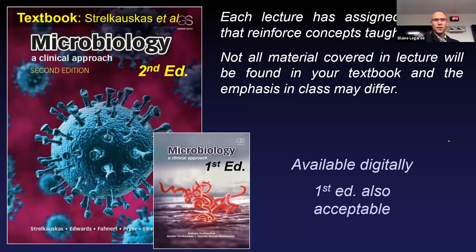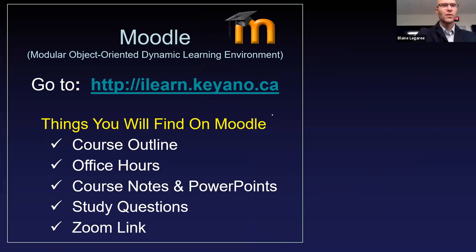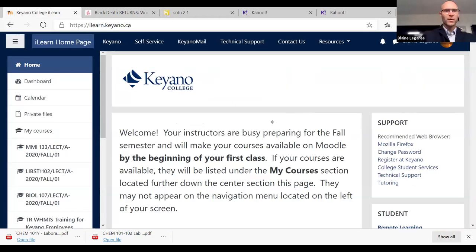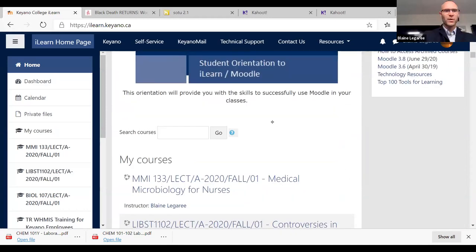Hopefully everyone has found Moodle. You can log in using your Keano credentials. So there's Moodle — this is what it looks like for me. This is the home page. I go down and find my classes, and you can see our class right there.